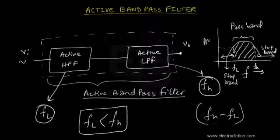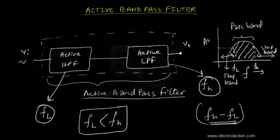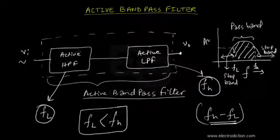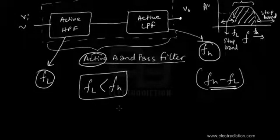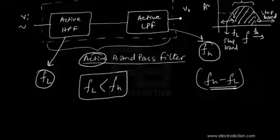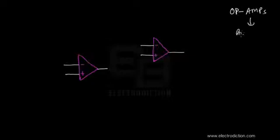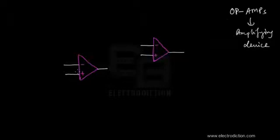To construct an active bandpass filter we need an active high pass and an active low pass filter stage. Since the bandpass filter is an active filter, it also includes an amplifier for each of the high pass and low pass filter sections along with passive filter stages. We're going to use op-amps as the amplifying device in both the high pass and the low pass filter stages.